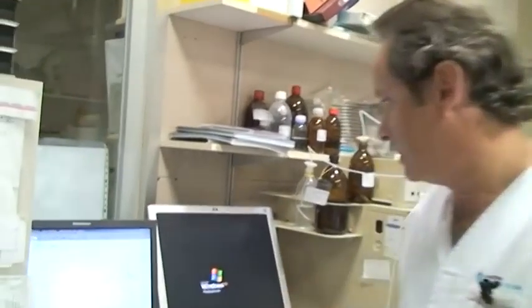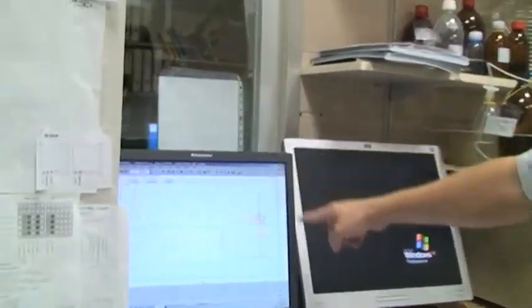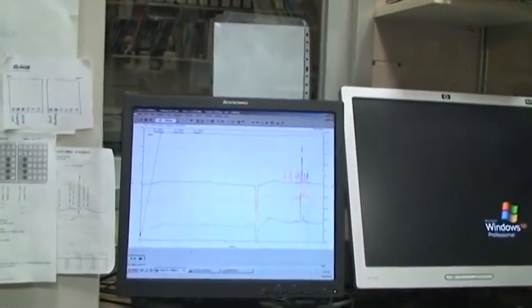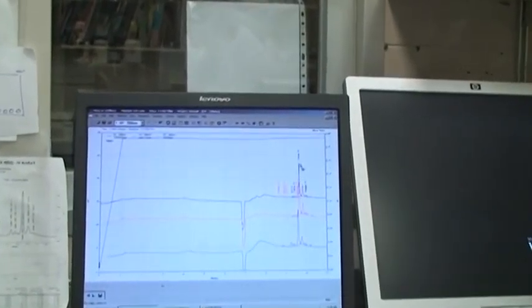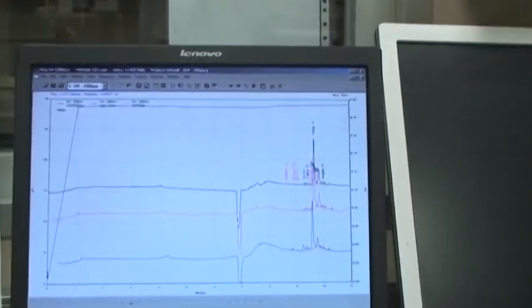In fact, we have here, if you can see these examples, this is the way we are seeing the analysis of sialotransferrin. This is the majoritary form, that is the tetrasialotransferrin, that is the normal form.